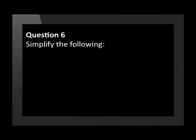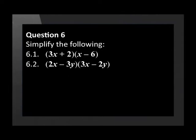Now let us look at question 6. This question again asks us to simplify the following. 6.1 is 3x plus 2 times by x minus 6. 6.2 is 2x minus 3y times 3x minus 2y. 6.3 is x minus 3 squared.